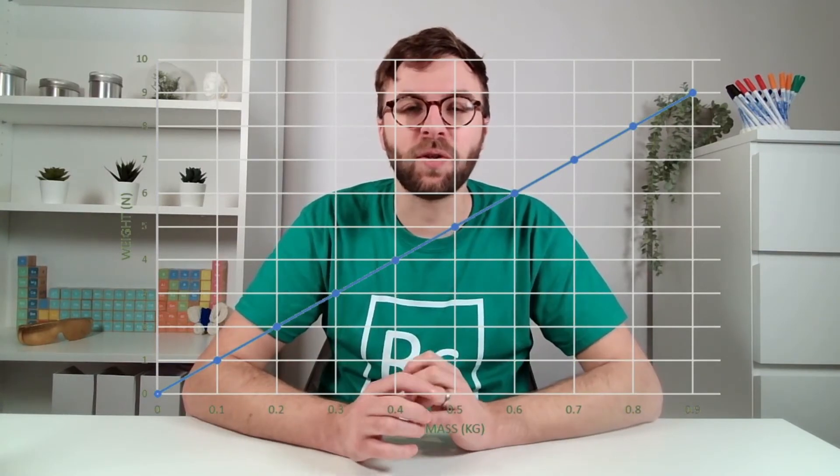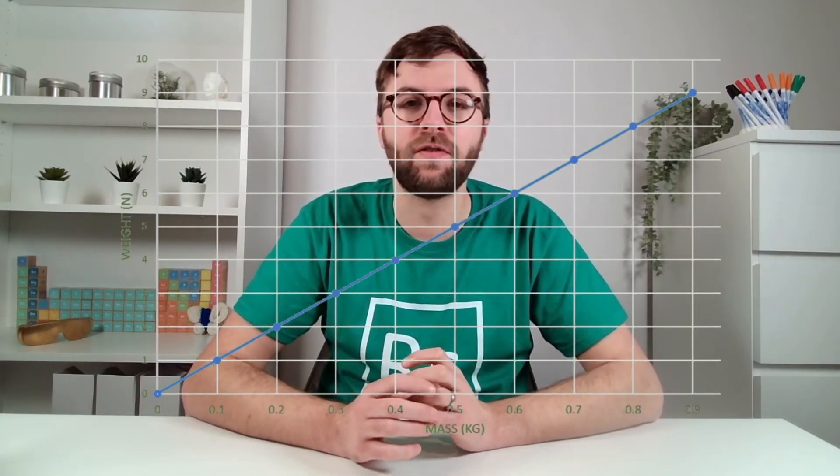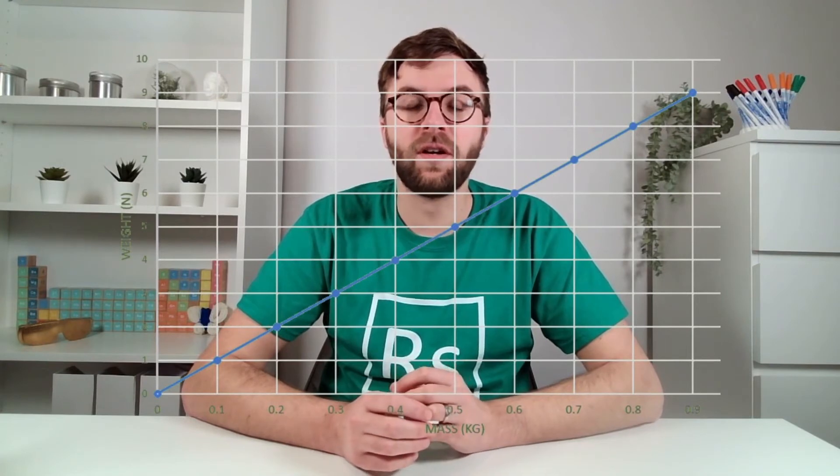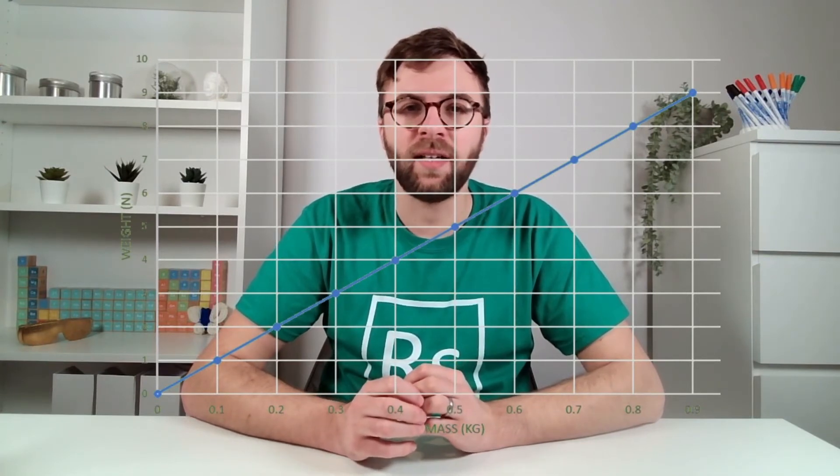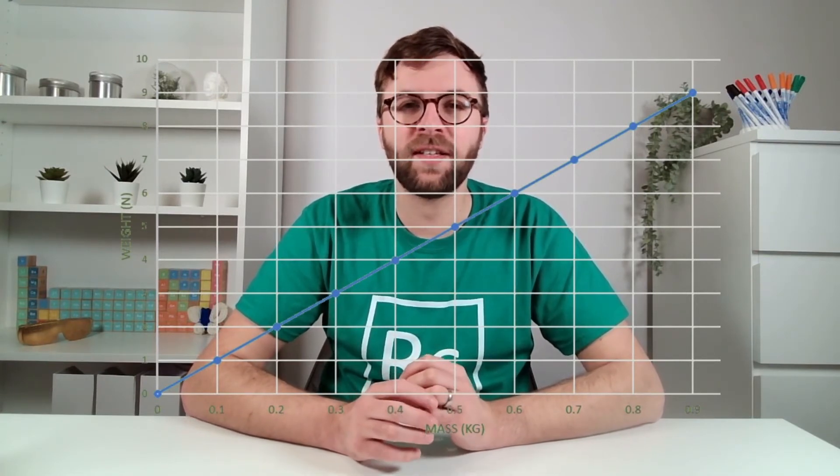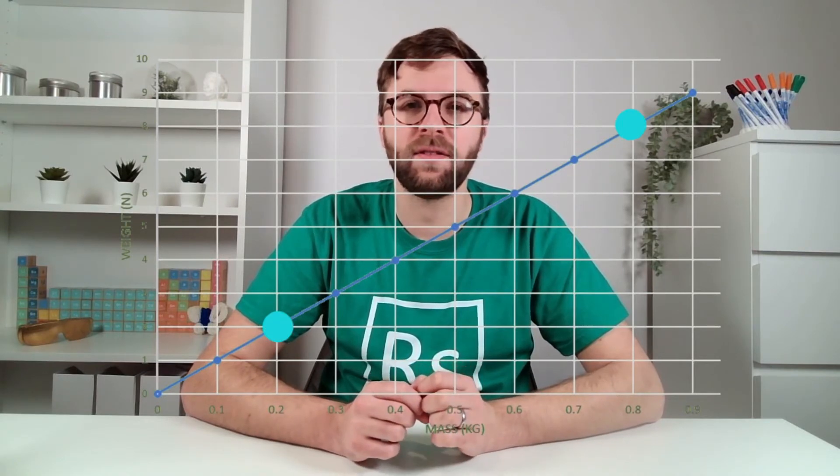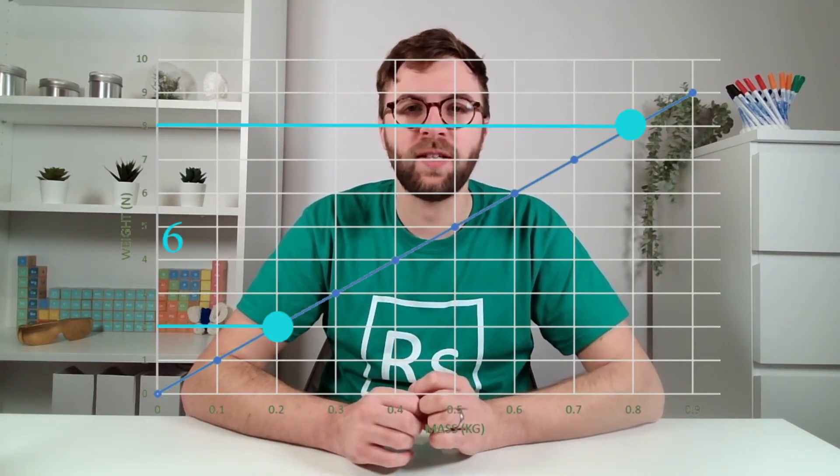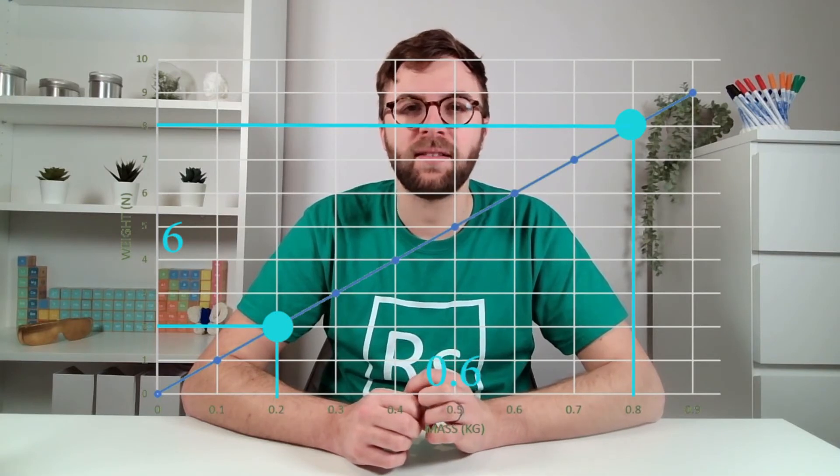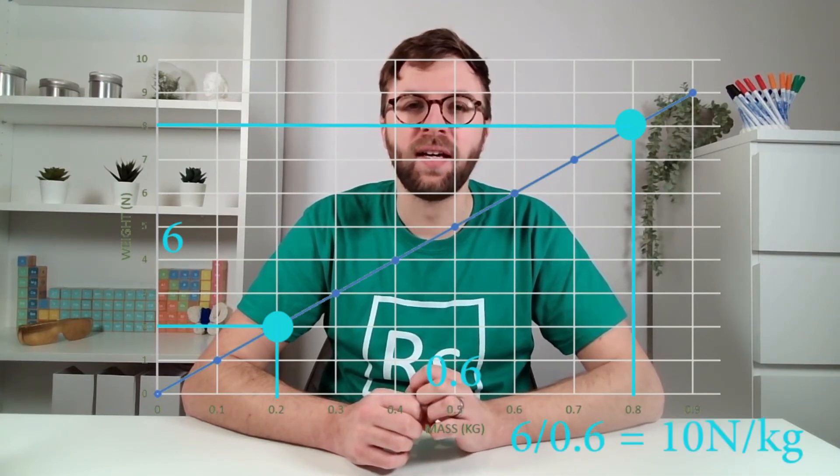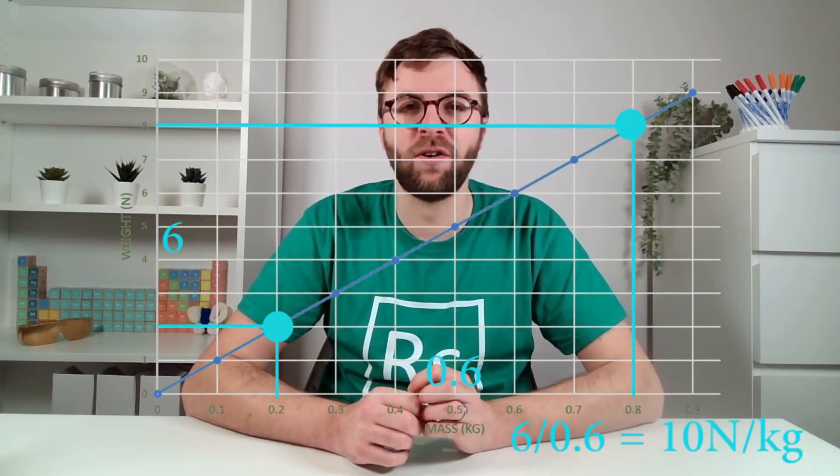Additionally we can use this graph to work out a rough approximation for the value of gravity. The value of gravity on Earth is actually the gradient of this line. So to work out the gradient of this line we want to take two values. We then want to take the change in y of these two values, and the change in x, and dividing one by the other gives us an approximation for gravity on Earth.